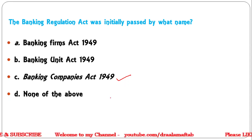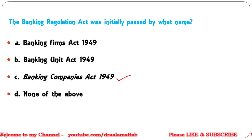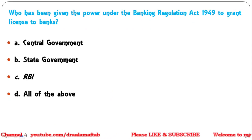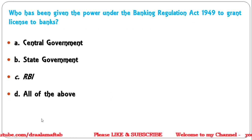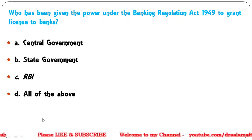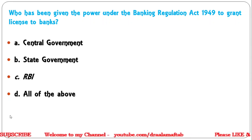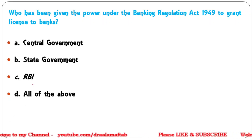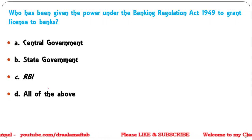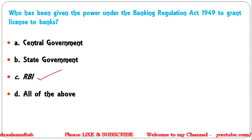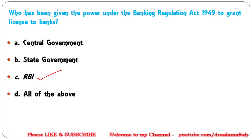Next question: Who has been given the power under the Banking Regulation Act 1949 to grant licenses to banks? Options: Central Government, State Government, RBI, or All of the above. The correct answer is RBI — RBI has the power under the BR Act to grant licenses to banks.